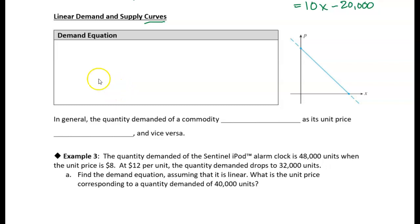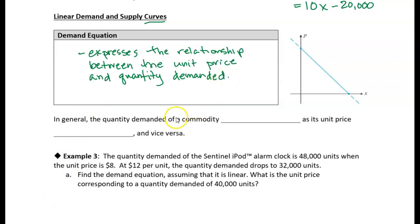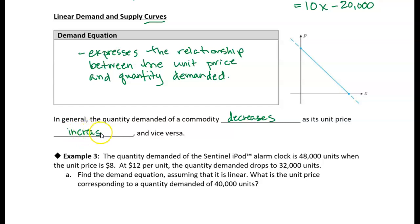So what's a demand equation? A demand equation expresses the relationship between the unit price and the quantity demanded. As you might expect, if the price goes down, there might be more demand for a product. But if the price goes up, then there are fewer people who can afford it, so the demand might go down. In general, the quantity demanded of a commodity decreases as its selling price increases, or equivalently, it increases as the price decreases.